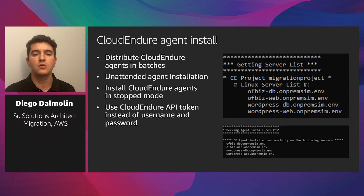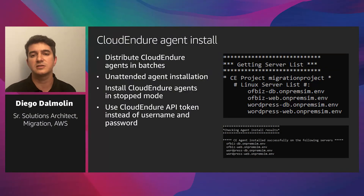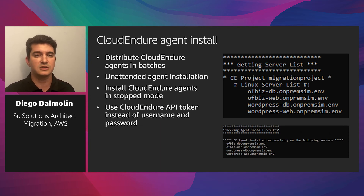The next script is to install CloudEndure agents. My recommendation is to install agents using unattended installation mode, and install the agents in all the servers you're going to migrate as quickly as you can. This is especially helpful for companies that implement change management and require approval to install agents in servers. The CloudEndure agents can be installed in stop mode, so you can start data replication only when the assigned migration wave is about to start. The script should report which servers had agents successfully installed and which need additional troubleshooting.